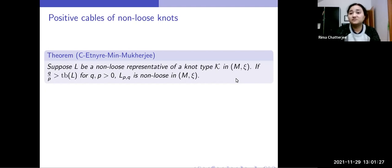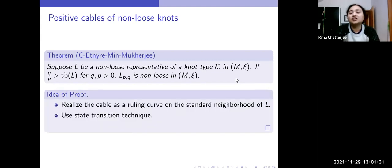Now, how does the proof work? Very briefly, the first thing is to realize the cable as a ruling curve on the standard neighborhood. So once we do that, the second step is to apply the state transition technique.